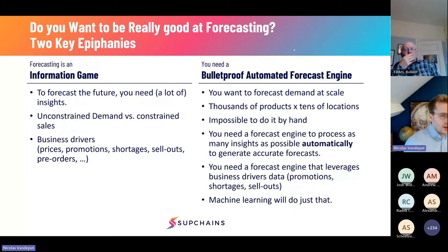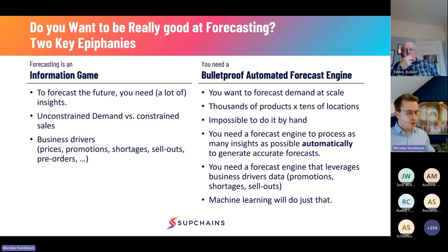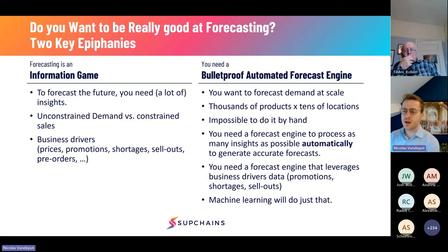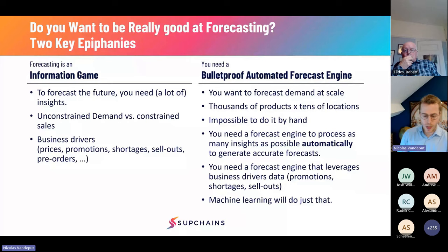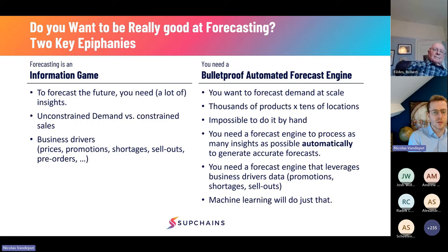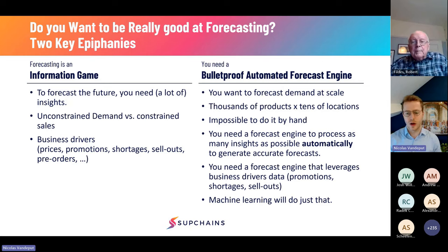Imagine a supply chain where you know client inventory, have sellout data, pre-orders, promotions, and weather impact. Feeding all this to a statistical tool would be massively difficult — it would struggle to make sense of all these business drivers. With machine learning it's much easier to use all of this information to generate a very strong forecast baseline. To summarise: if you want a great baseline, play the information game — find more insights, and use machine learning to generate the baseline automatically. I call this a 'bulletproof automated forecast engine.'